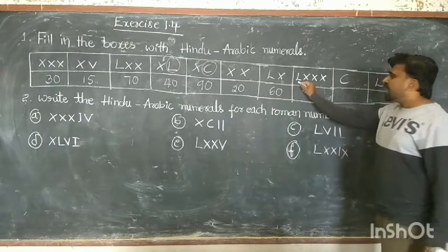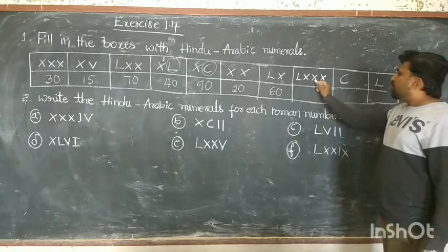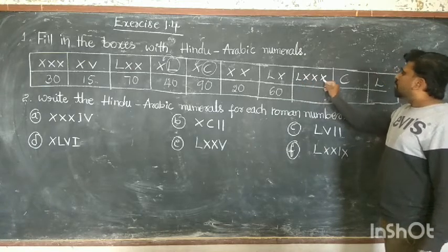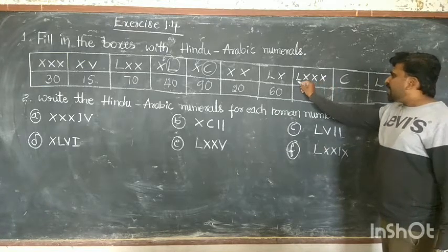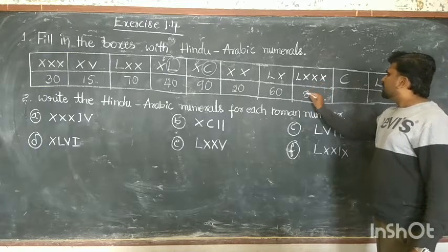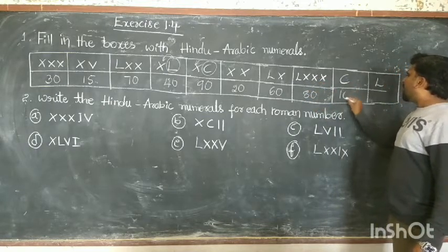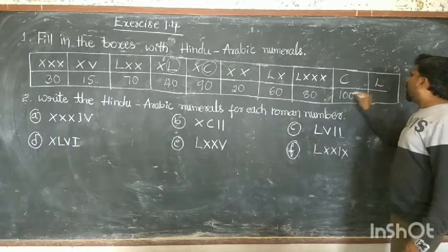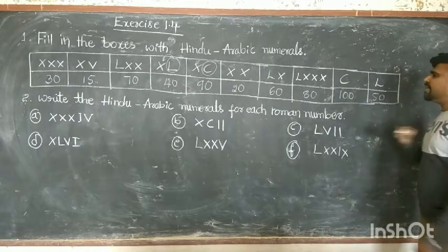Next: 50 plus 10 plus 10 equals 70; then 80. C means 100. You already know that L means 50. Clear — this is the first part done.